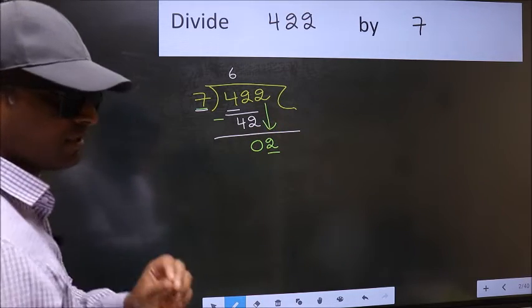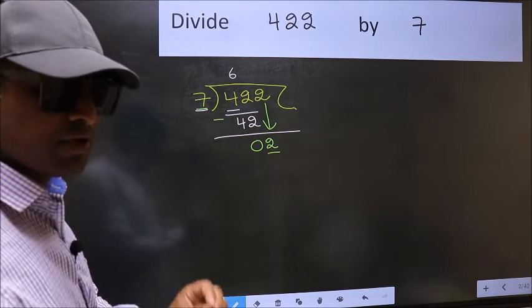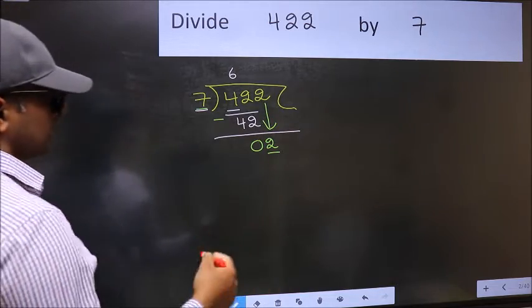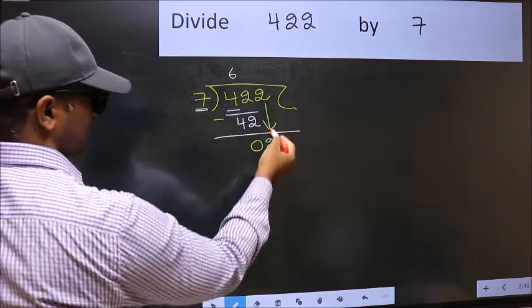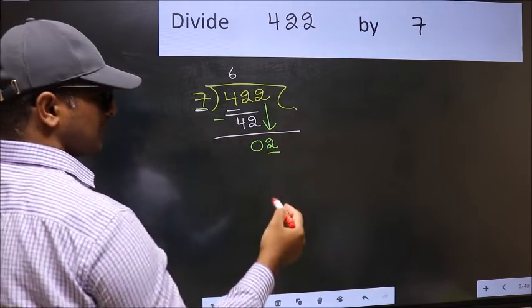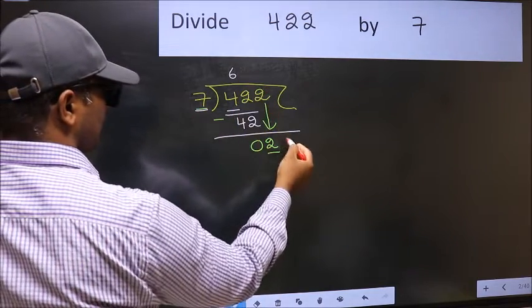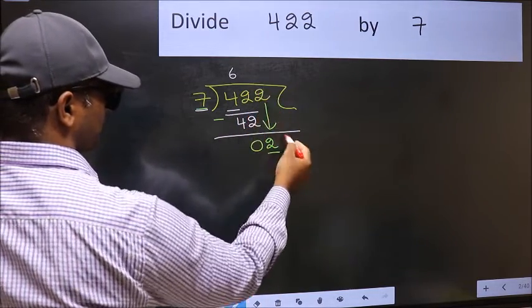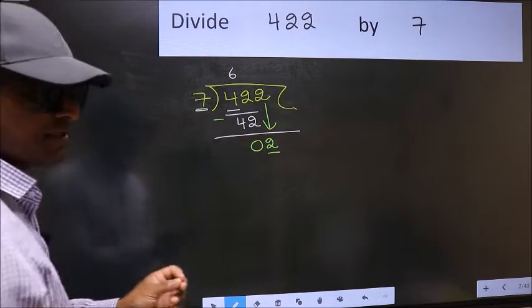Which is wrong. Why is it wrong? Because just now you brought this number down, and in the same step you want to put dot and take 0. Which is wrong.